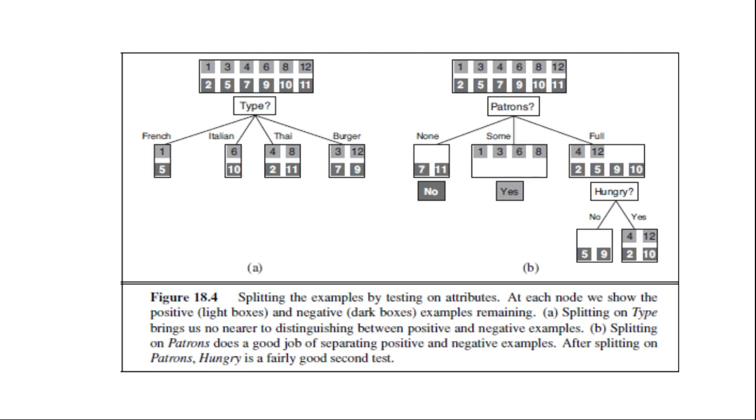Fourth, if there are no attributes left but both positive and negative examples, it means that these examples have exactly the same description but different classifications. This can happen because there is an error or noise in the data, because the domain is non-deterministic, or because we cannot observe an attribute that would distinguish the examples. The best we can do is return the plurality classification of the remaining examples.